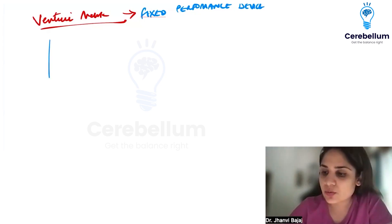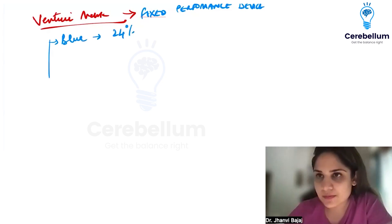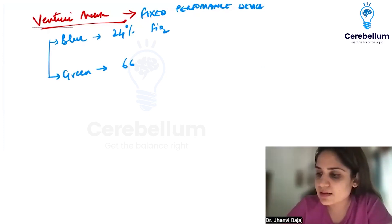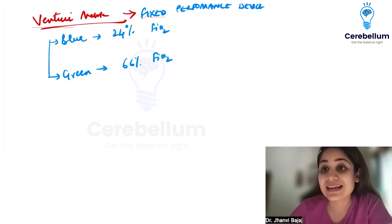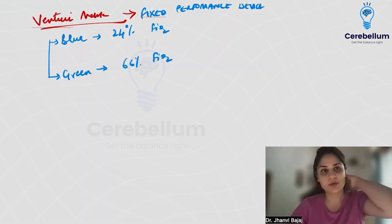For venturi mask color codes, remember the blue one because it is the starting FiO2 you can give - that is 24%. The maximum FiO2 you can give with the venturi mask is 66%, which corresponds to the green colored venturi.